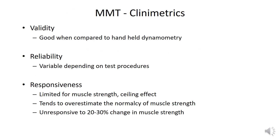So what are the clinimetric properties of manual muscle testing? In terms of validity, it is good compared to handheld dynamometry. For reliability, it is rather variable as it really depends on the specifics of the testing procedure itself, so different reliability studies report different reliability levels. It is therefore crucial that details of the testing procedure are examined to ensure you interpret the reliability rating in the appropriate context. Manual muscle testing also has a ceiling effect — the testing isn't able to differentiate between strengths that are in the upper range of what we perceive as normal. It also tends to overestimate how normal a muscle is, and most importantly, as it is a categorical scale, it can be rather unresponsive to muscle strength changes of between 20 to 30 percent.